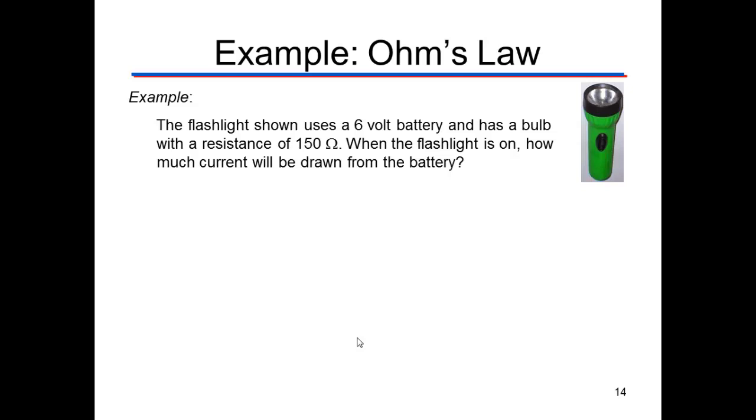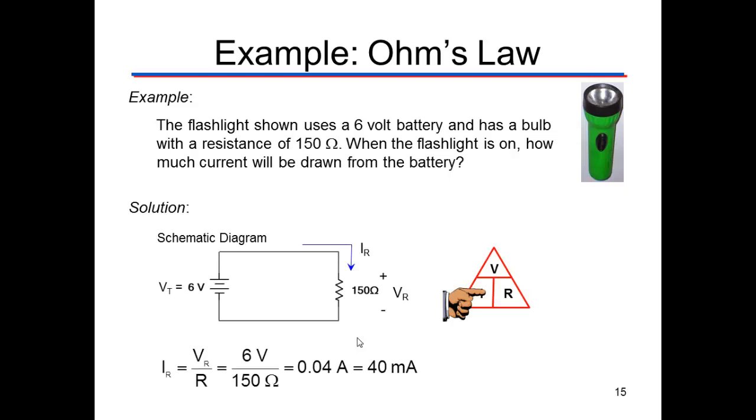Let's do one example. This is an Ohm's Law problem. We have a 6-volt battery and the bulb has a resistance of 150 ohms. When the flashlight's on, how much current will flow? We redrew that as a schematic and asked, what are we looking for? We want to know current.